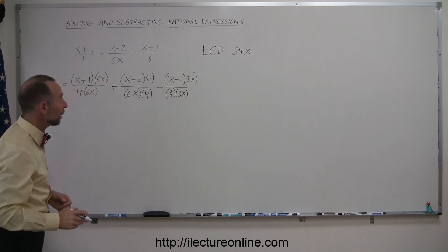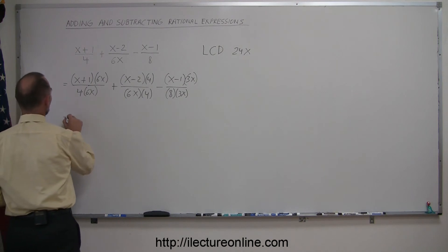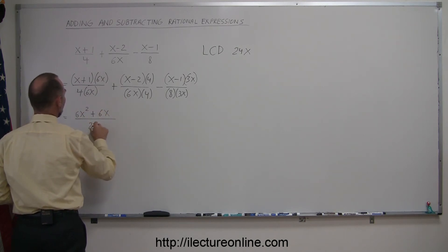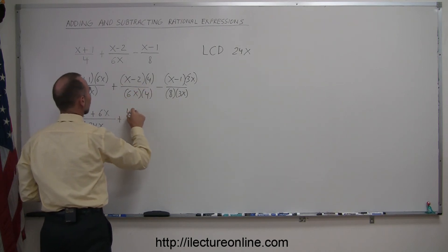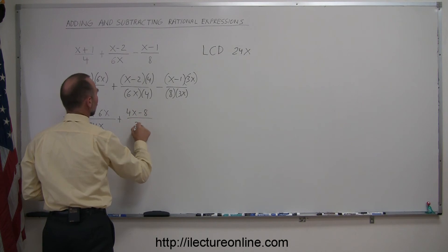All right, so now we go ahead and multiply these out. So this is equal to 6x times that is 6x squared, plus 1 times 6x is 6x, divided by 24x, plus 4 times x is 4x, 4 times negative 2 is minus 8, divided by 24x.